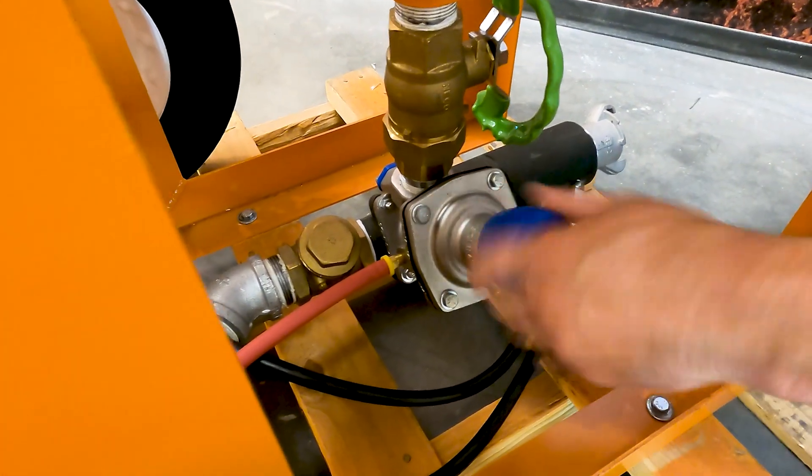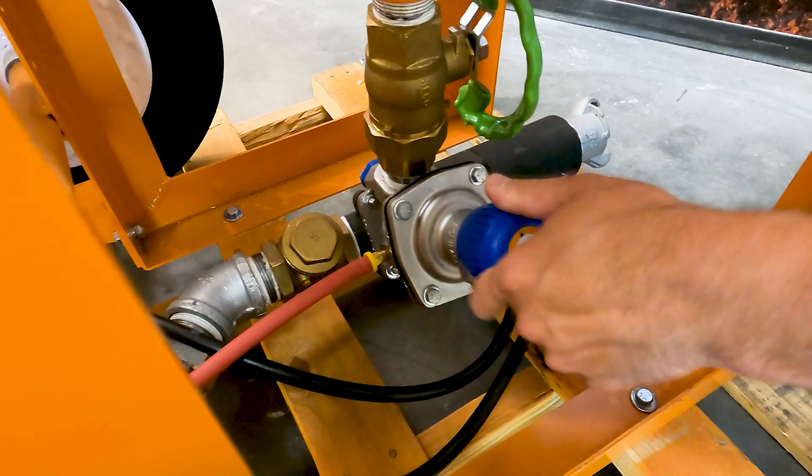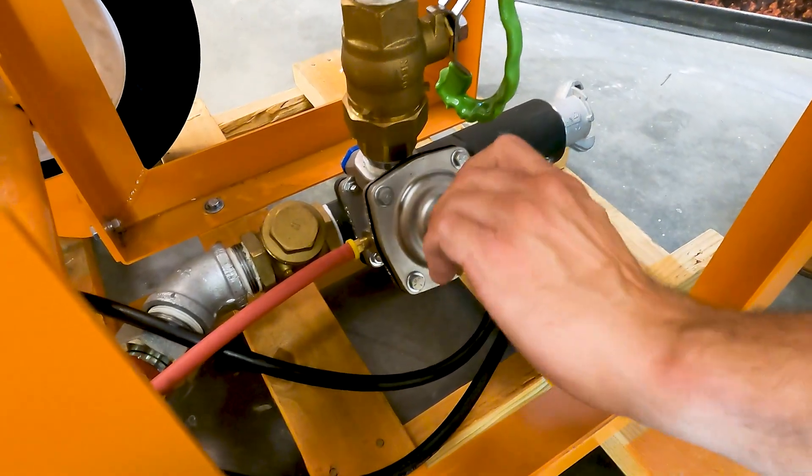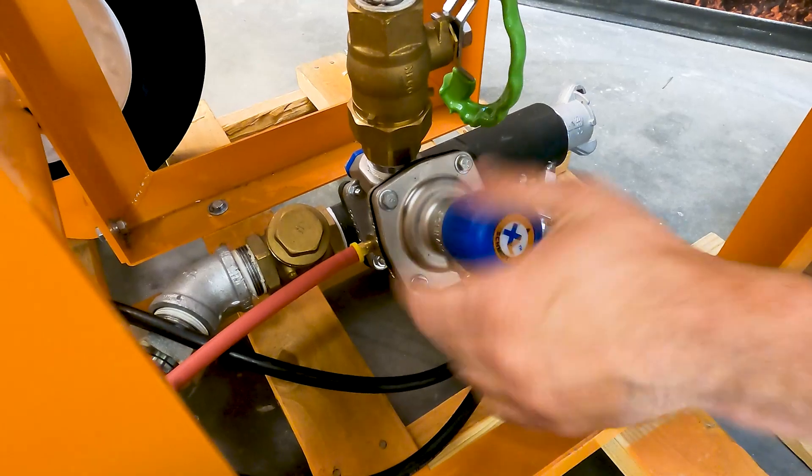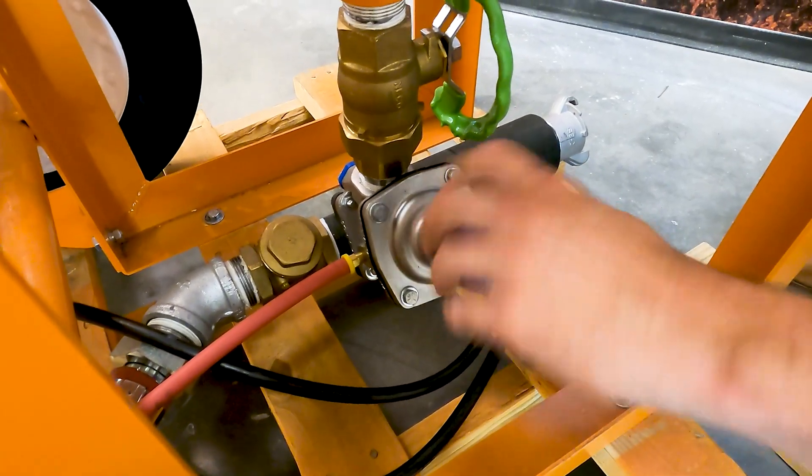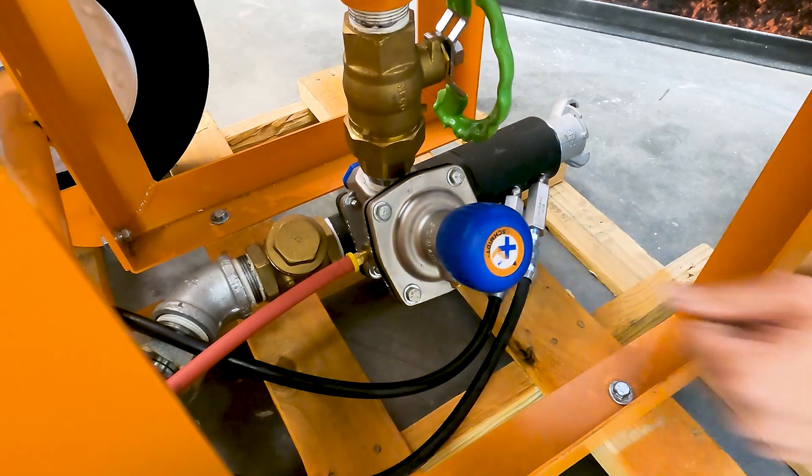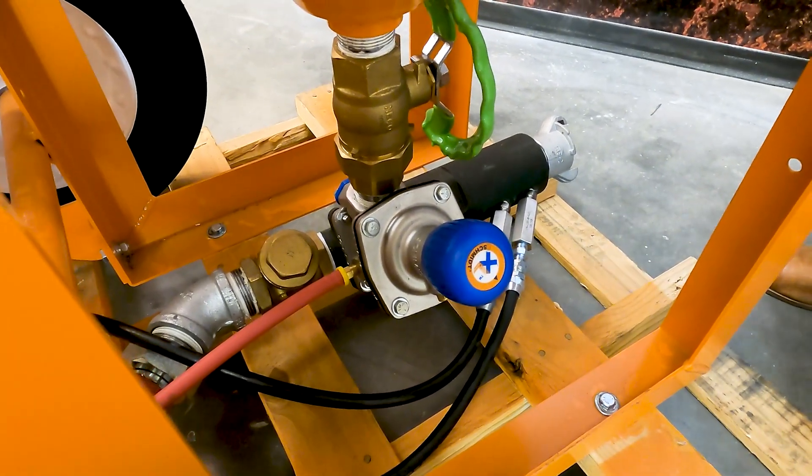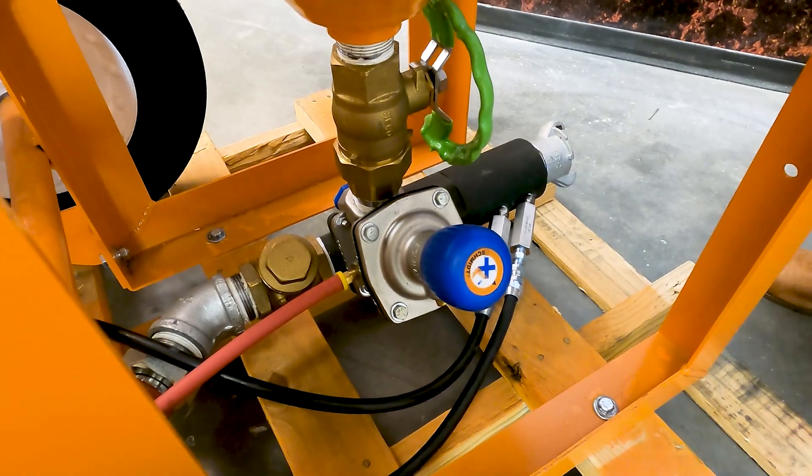So how we adjust this is you're going to want to take the knob all the way clockwise until it stops. And from there, you will go four, say four and a half turns. And that is going to be a good starting setting for a standard garnet.